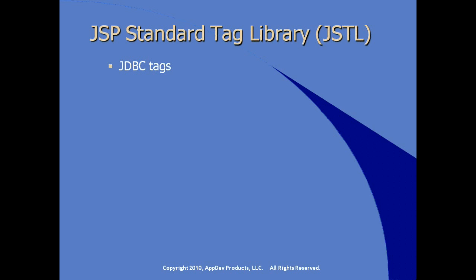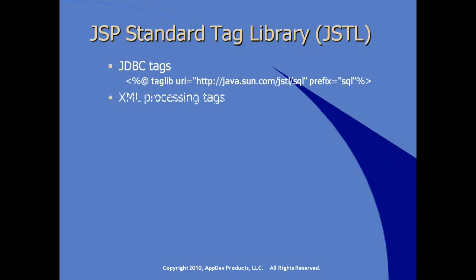Another commonly used tag library is the JDBC tag library. The taglib directive points to the URI for JSTL/sql, and traditionally the prefix attribute is set to SQL. There are also XML processing tags if your JSP does a lot of XML processing — the URI is available for the XML tag library, traditionally prefixed with X. And there are function tags, traditionally prefixed with FN.